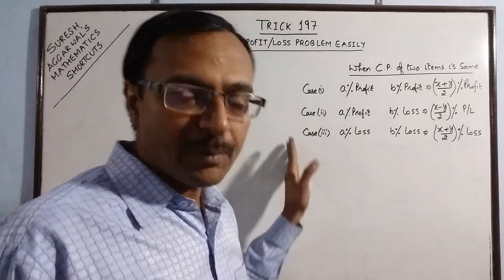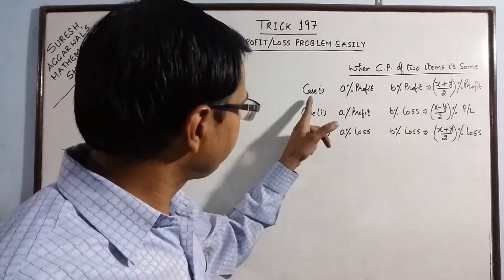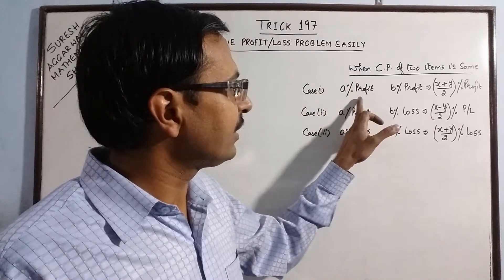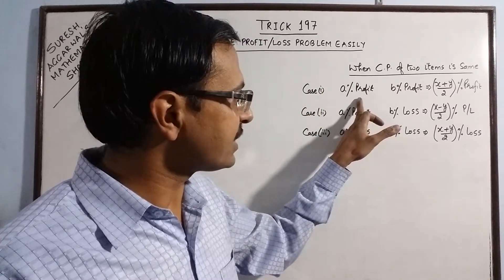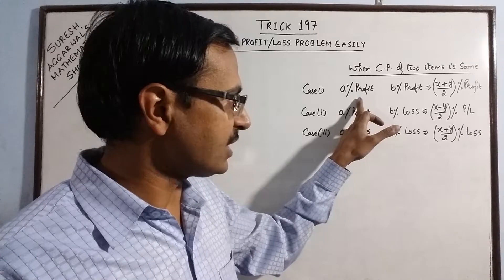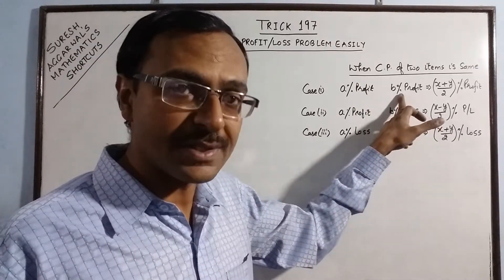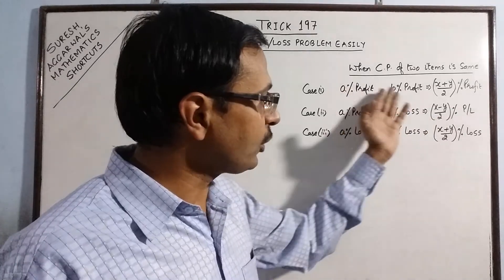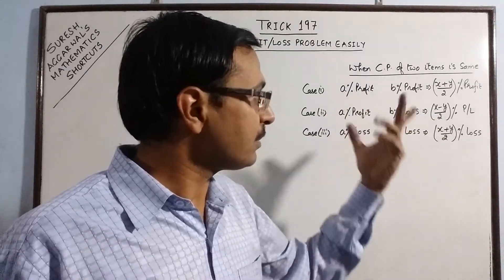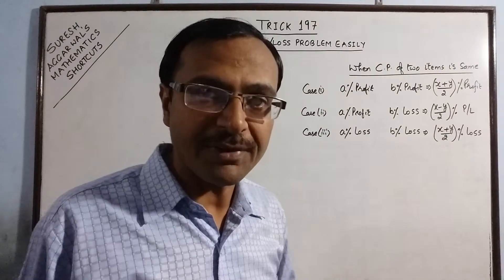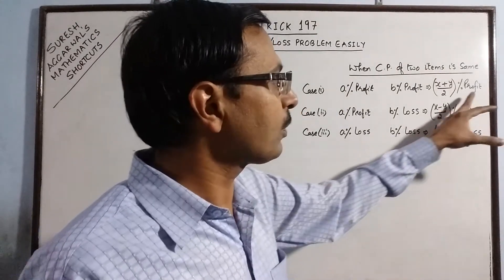So we will divide the entire problem into three cases. The first case when there is a particular percentage of profit on the first item and a particular percentage of profit on the second item. So we have profit on both the items, the percentage can be same or it can be different. So we need to find the overall profit.